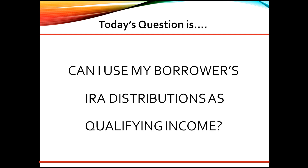If the borrower has recently established the distribution or increased their distribution, the borrower will need to provide the executed distribution plan from the financial institution that holds the IRA funds. The underwriter will also need to determine continuance of income for at least three years, and that the borrower is of age to take distributions without penalty.